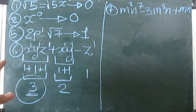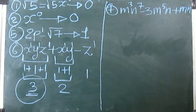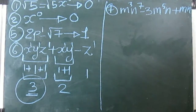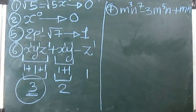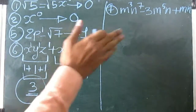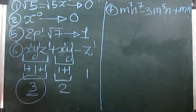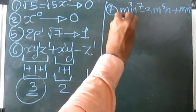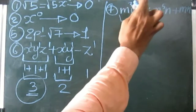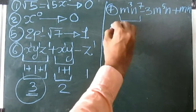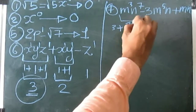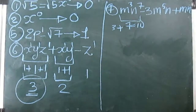We learn one thing: whenever they have given different variables and are asking for the degree, we are supposed to find the power of each term — meaning we add the powers. The same concept is applied here. The first term has a power of three plus seven, that is ten. The power of the first term is ten.